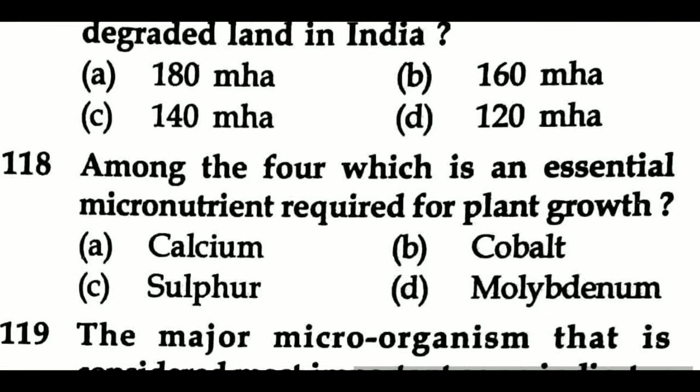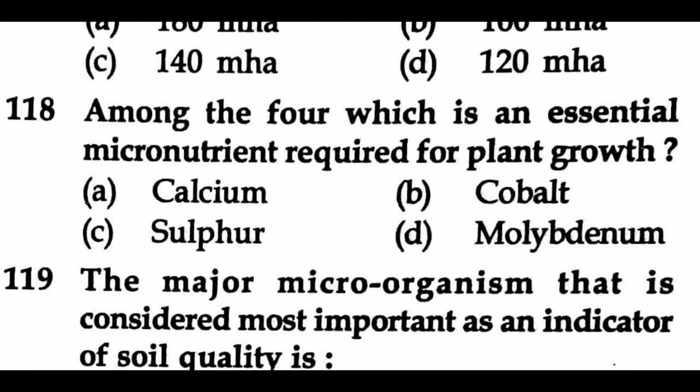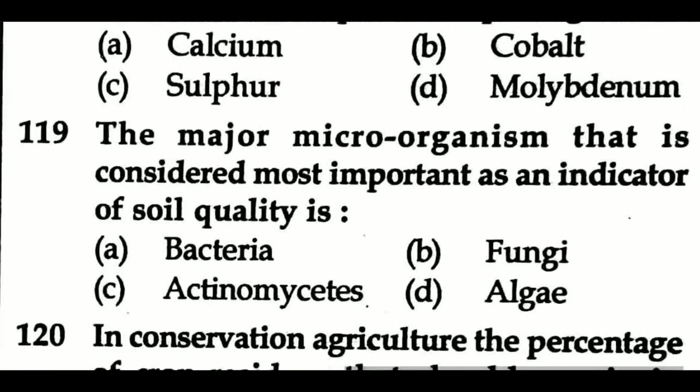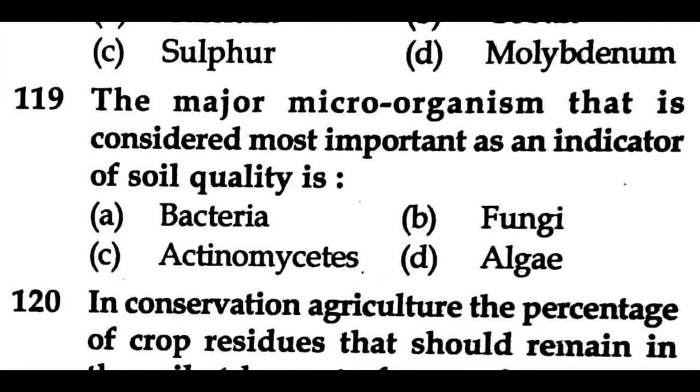Question 118: Among the four, which is an essential micronutrient required for plant growth? Option A: calcium, Option B: cobalt, Option C: sulfur, Option D: molybdenum. Question 119: The major microorganism considered most important as an indicator of soil quality is — Option A: bacteria, Option B: fungi, Option C: actinomycetes, Option D: algae.